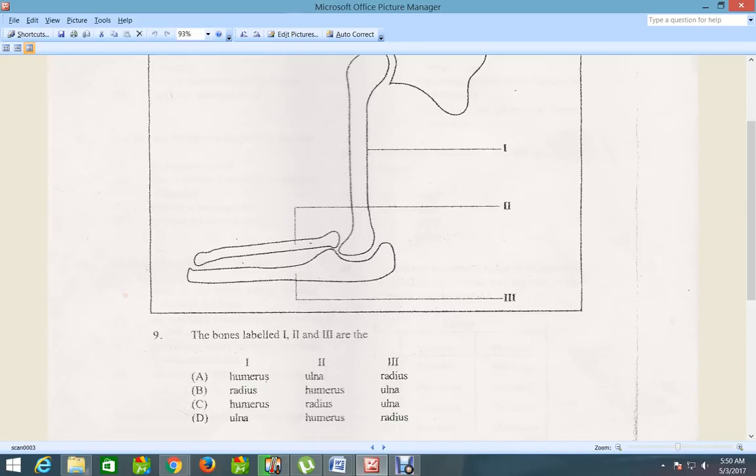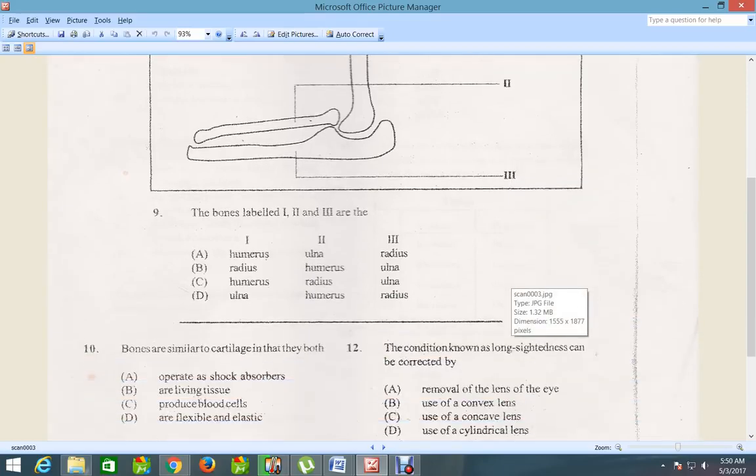So either A or C at the moment. Move on to the second bone, this bone is the radius. So C has the radius there, and the last one is the ulna. So C is the correct answer.